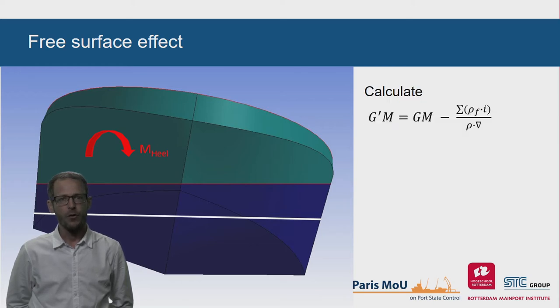In the formula, rho-f is the specific density of the fluid of the tank. I is the transverse moment of inertia of the fluid surface in the tank.